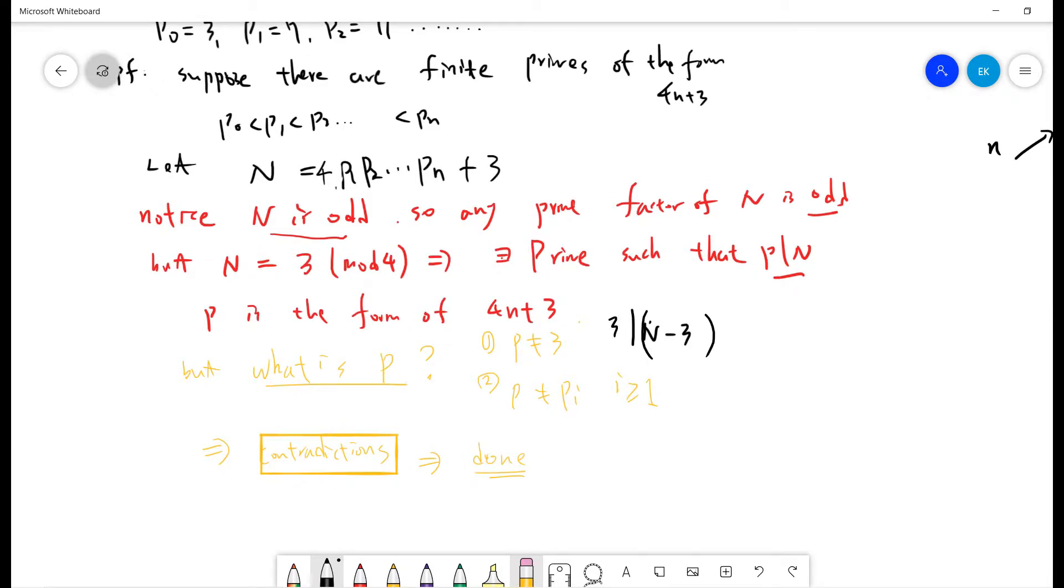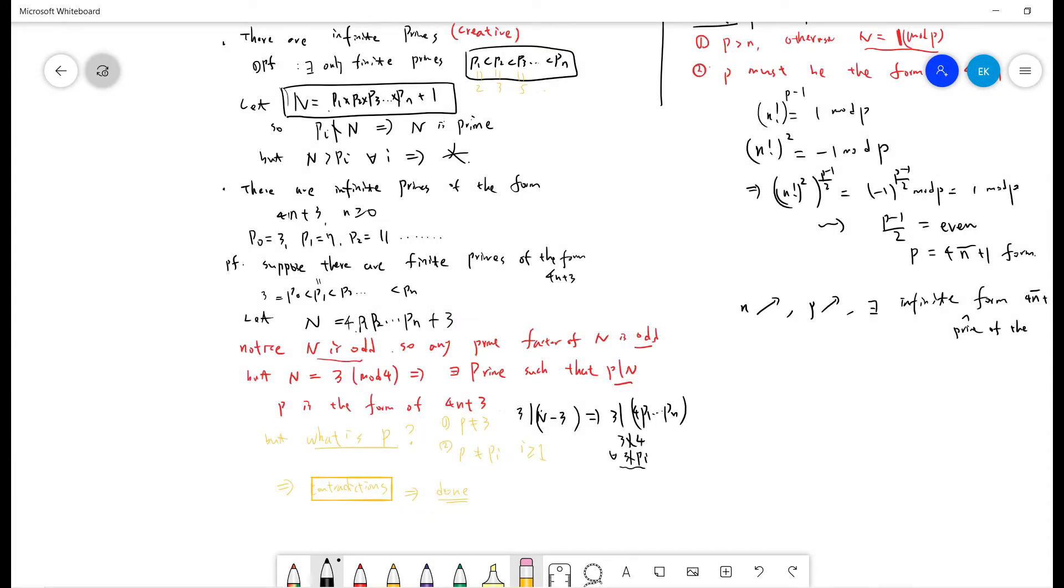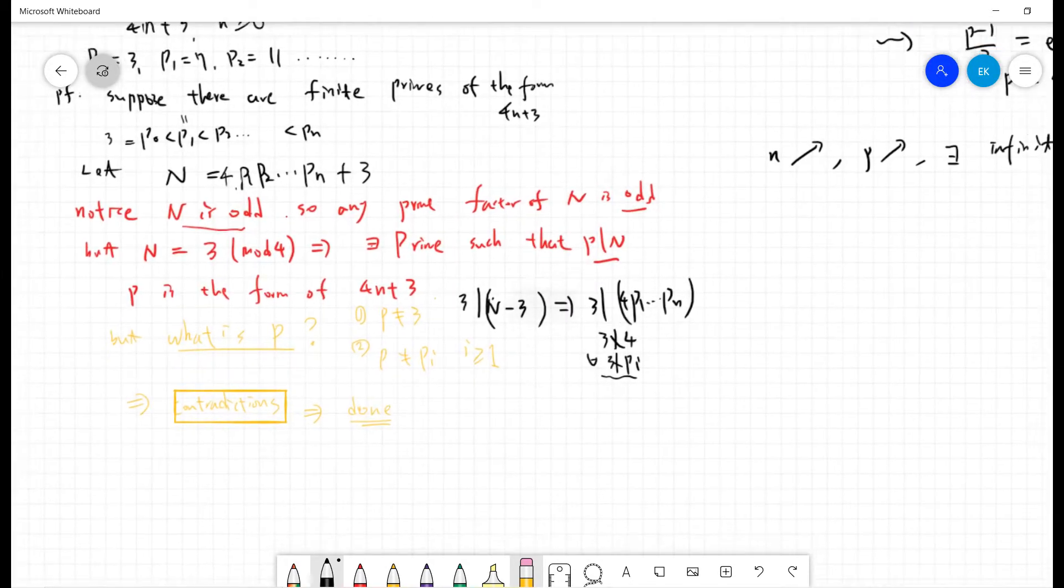So 3 will divide 4p1 up to pn. And this cannot happen, because 3 did not divide all the pi, because 3 is p0. And p1 is 7.